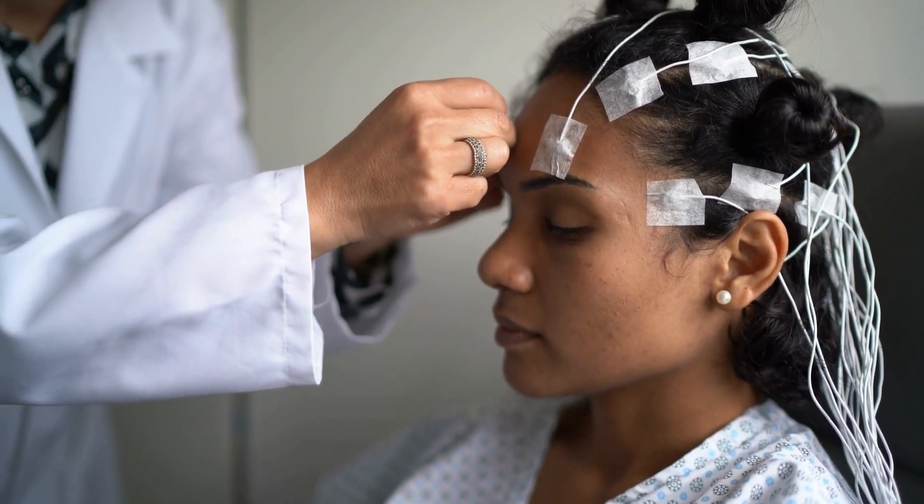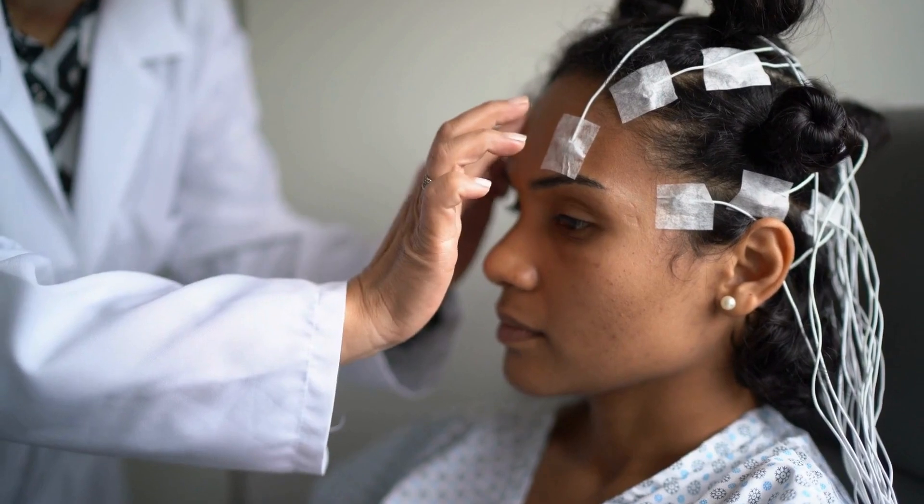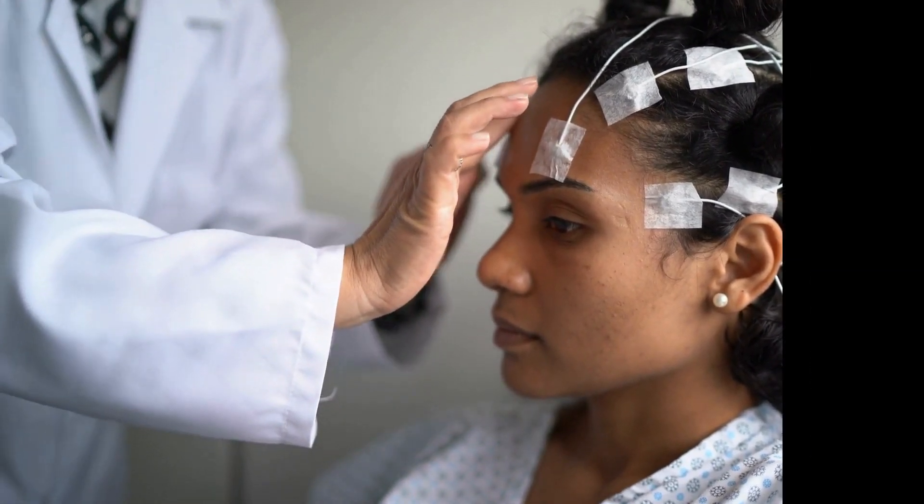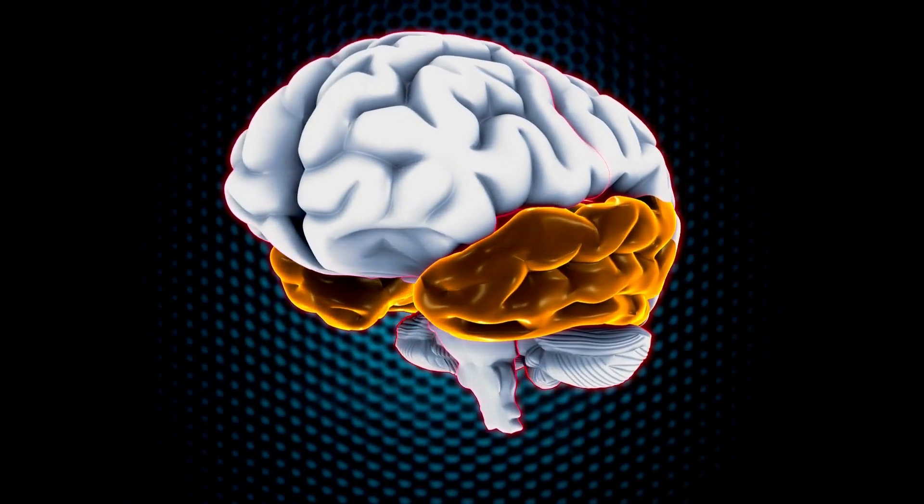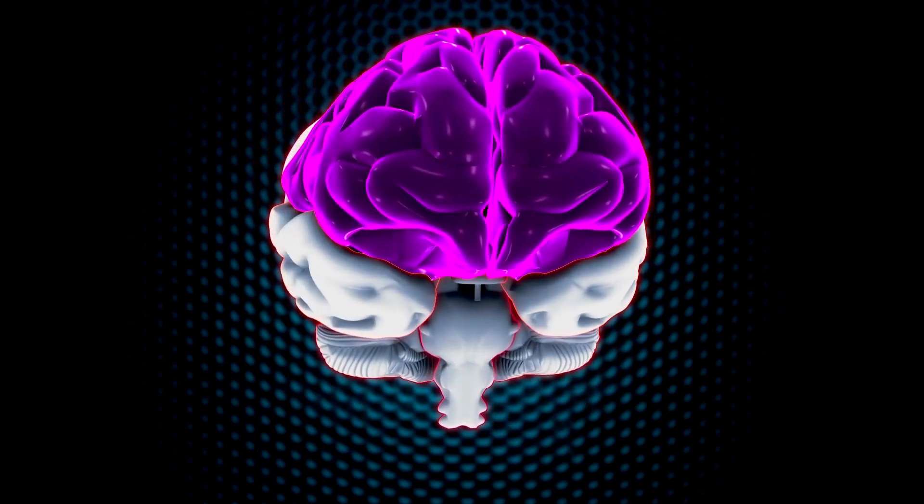Electrodes placed in the same anatomical spot may influence different networks in different people, so each person's functional networks are positioned slightly differently.